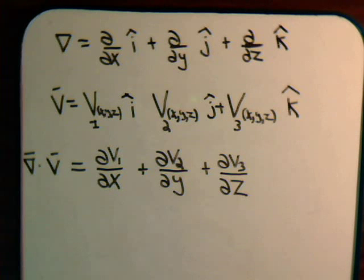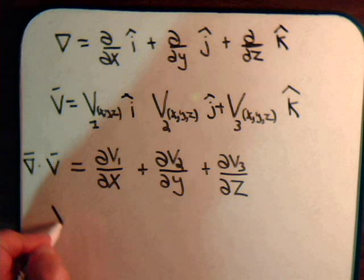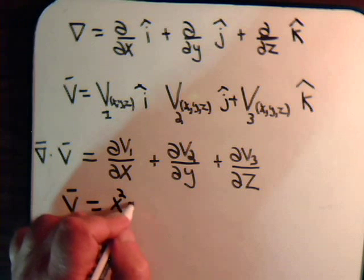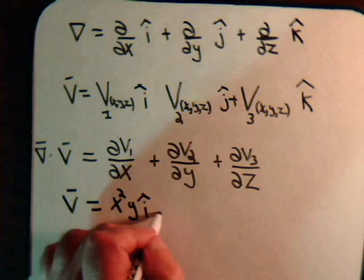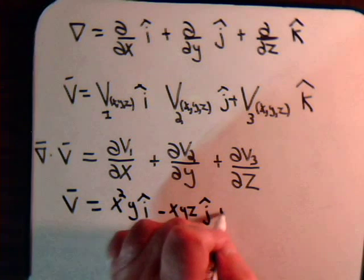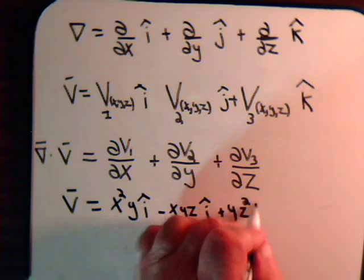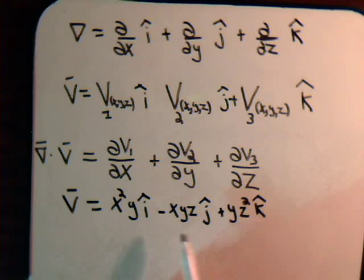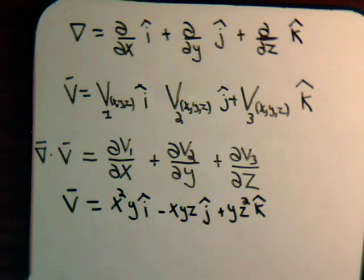Suppose that we had a vector V with these components: x squared times y for the i-th component, minus xyz for the j component, and plus y times z squared for the k-th component. So the divergence of V would be the partial of the first component with respect to x, plus the partial of the second with respect to y, plus the partial of the third with respect to z.